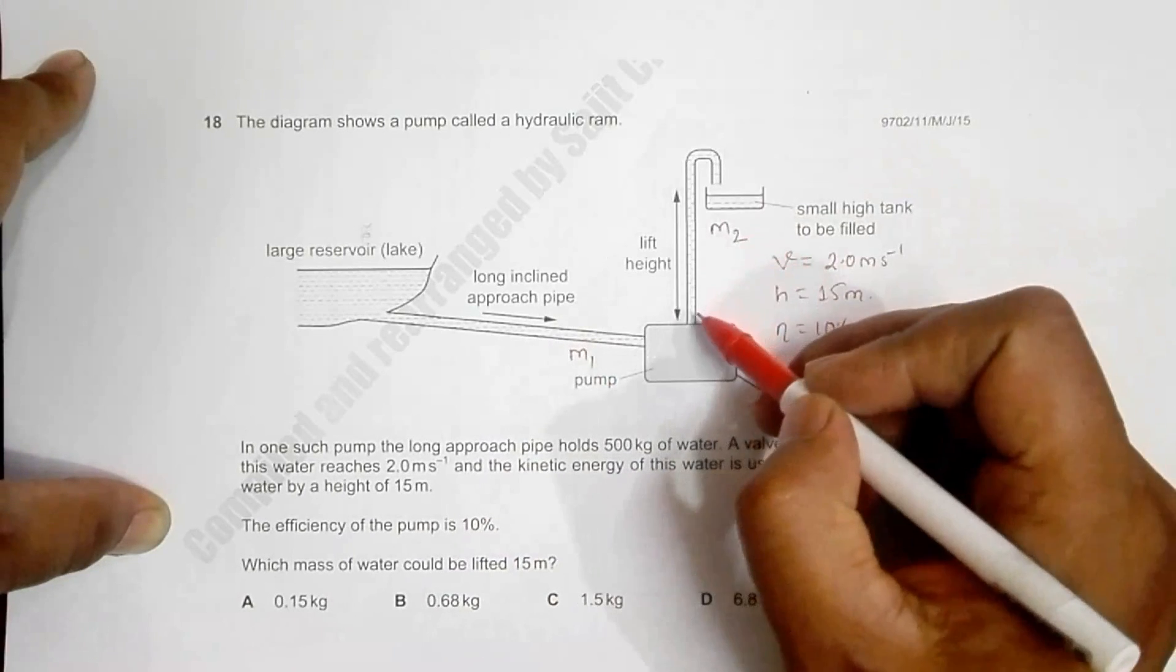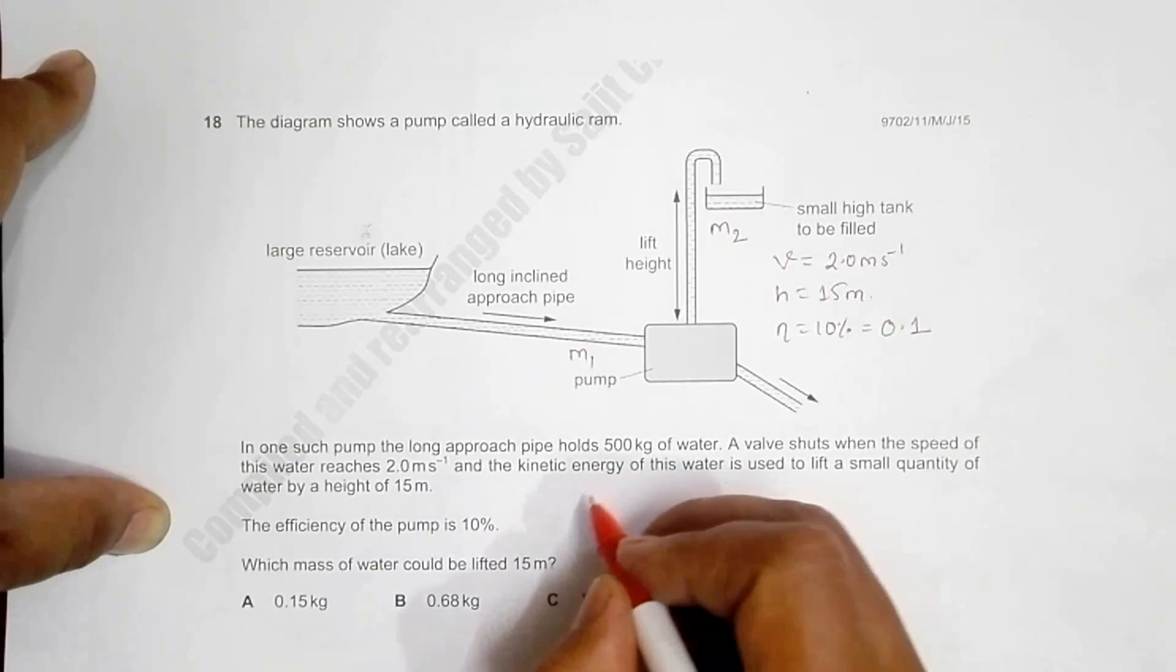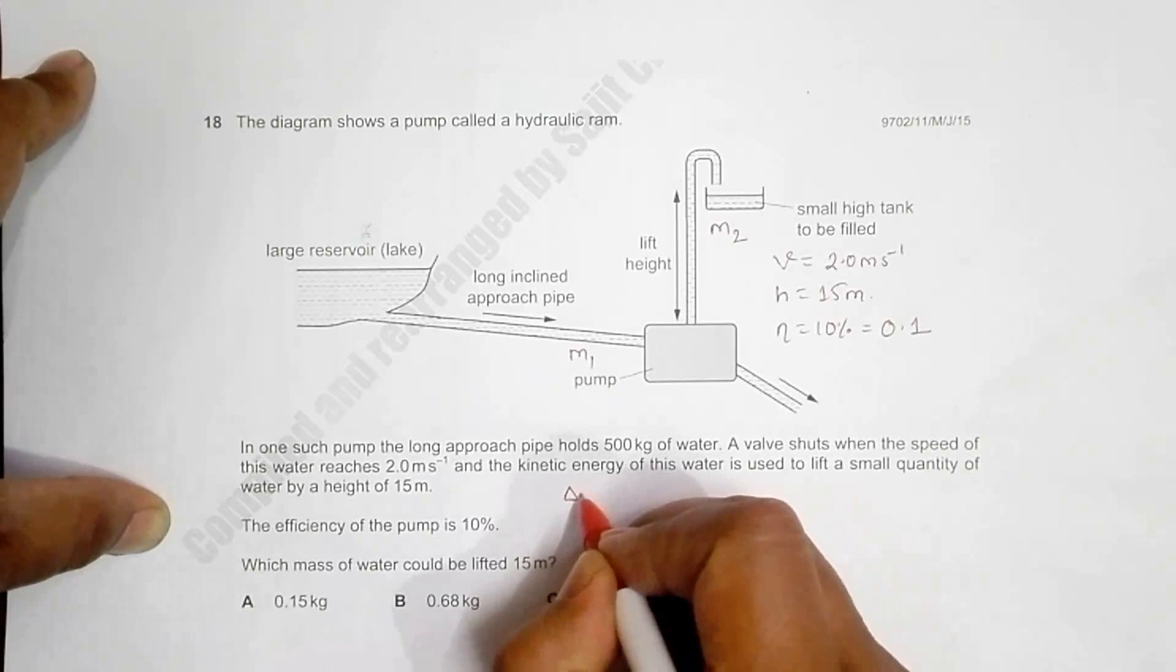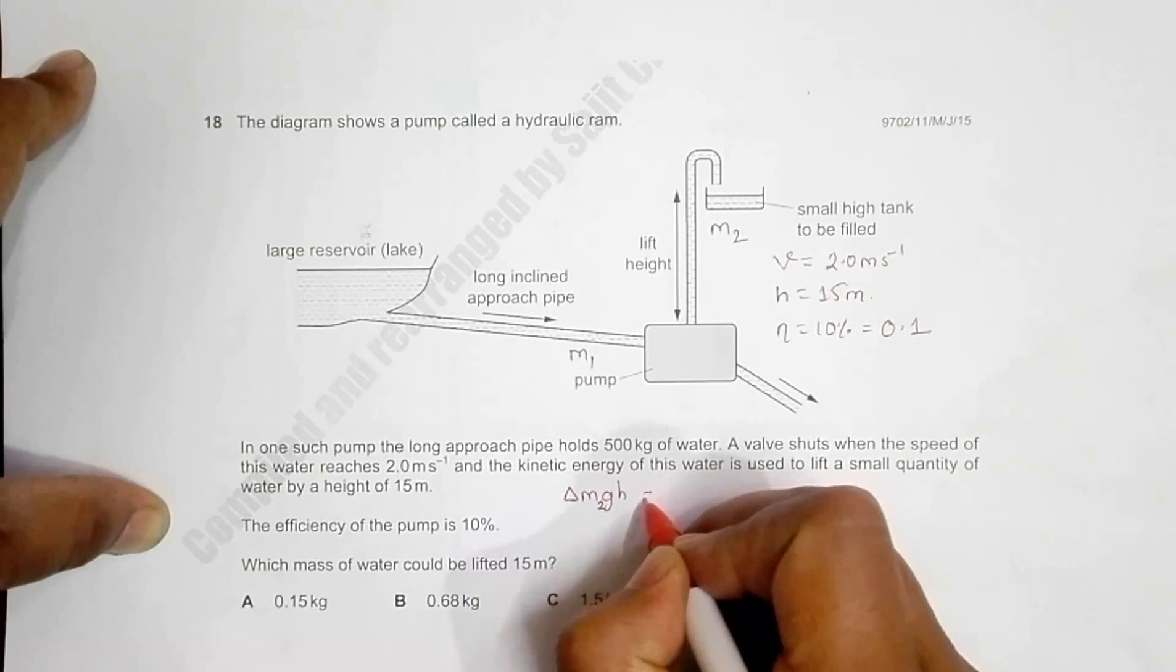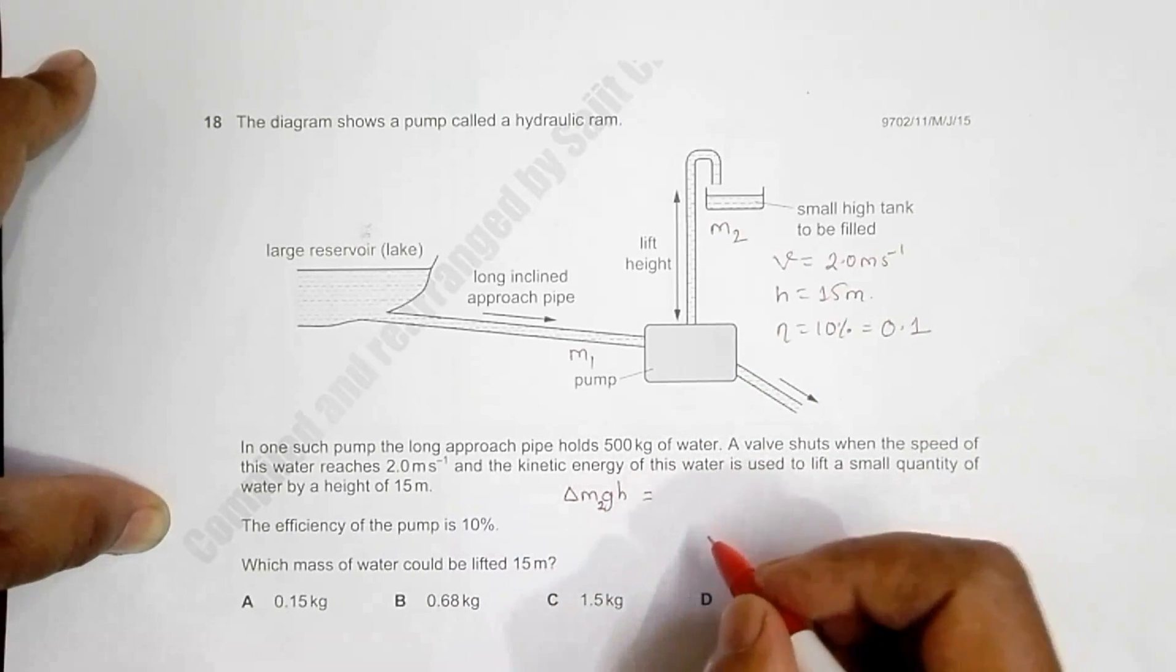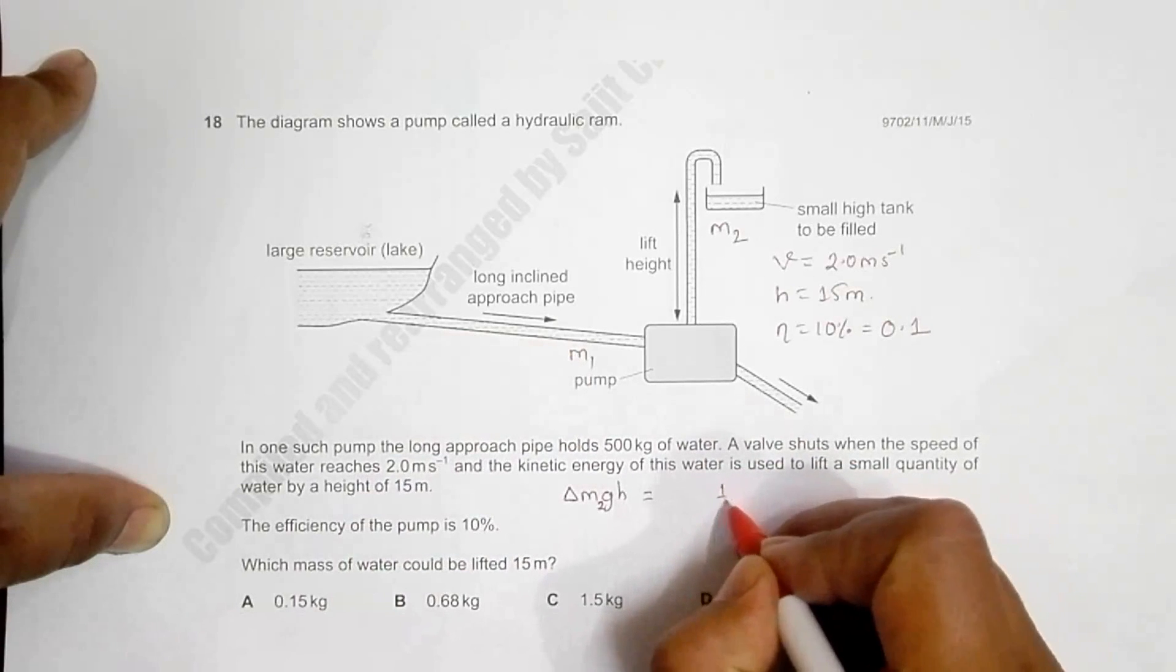Since water rises through a height, this water gains potential energy. So the change of potential energy of this water, since this water has got mass m2, I write m2gh. This is because of the KE of this water.